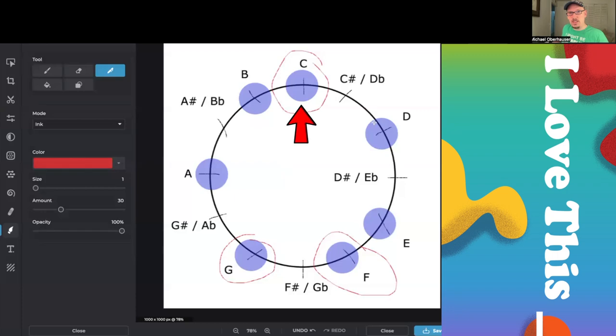So if we're starting from C, C, D, E. That's a major third, so we call it a major mode. Same with F. That's a major third, so we call it a major mode. And from G. Another major third, so we call it a major mode.